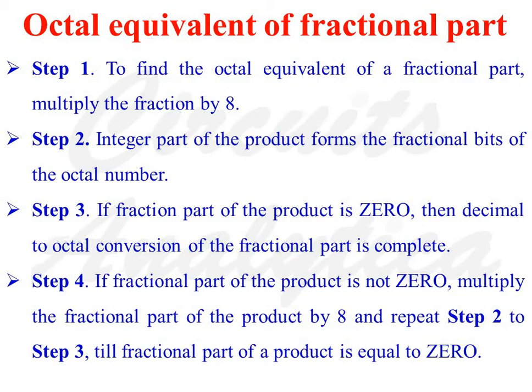To find the octal equivalent of the fractional part, multiply the fraction by 8. The integer part of the product forms the fractional bits of the octal number. If the fractional part of the product is 0, the conversion is complete. If not, multiply the fractional part of the product by 8 and repeat until the fractional part equals 0.